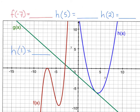Now we're looking at f of negative 7. I've put four more problems on the board. When x is negative 7 — here's negative 5, negative 6, negative 7 — how high is the red line? You don't go up or down at all, so it's 0. f of negative 7 is going to be 0.